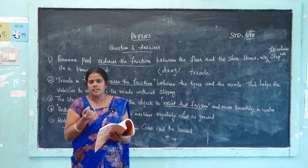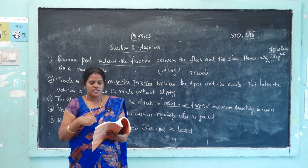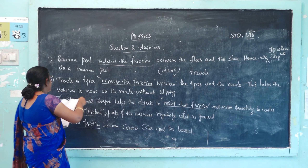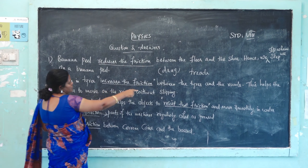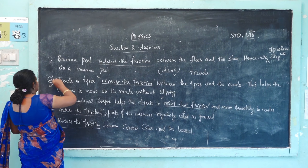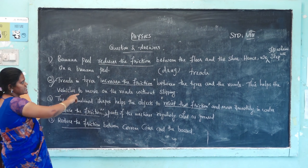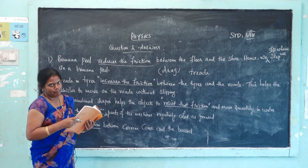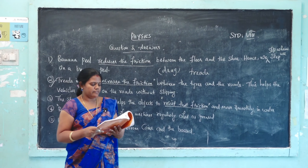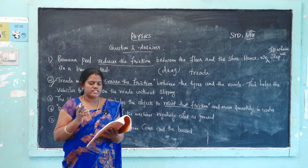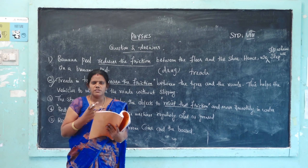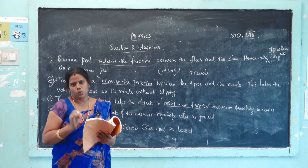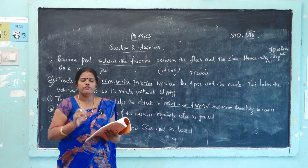Fourth: give a situation where we increase friction. Treads on tires increase friction between the tires and the road. This helps vehicles move on the roads without slipping.